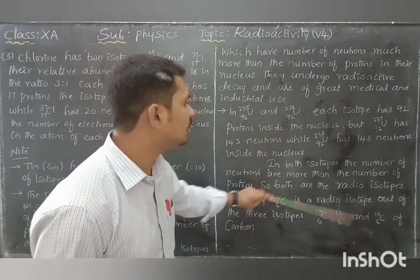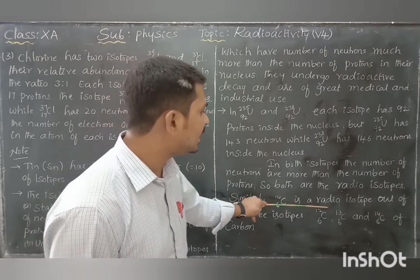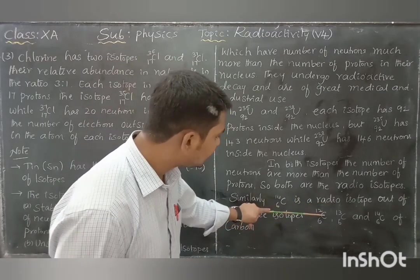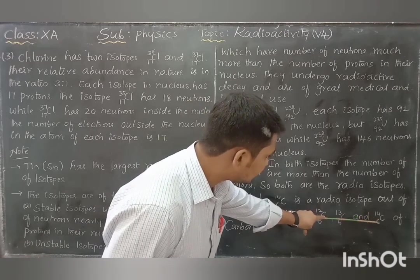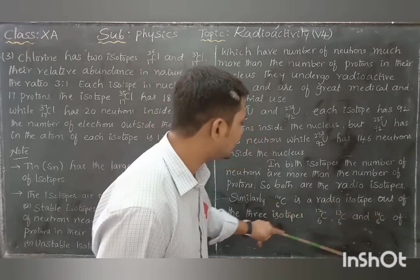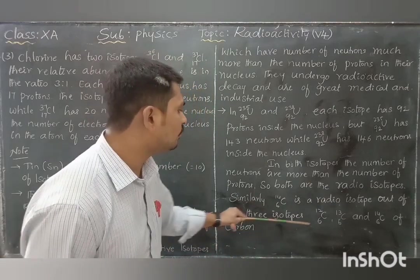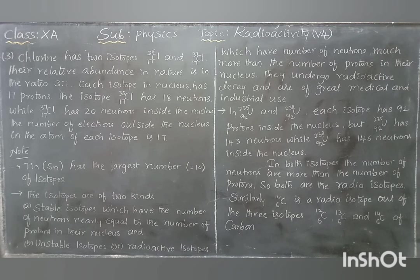Similarly, C-6-14 is a radioisotope out of the three carbon isotopes C-6-12, C-6-13 and C-6-14, because C-6-14 has a larger number of neutrons compared to the other two. Unstable or radioactive isotopes — in which the number of neutrons is much more than the number of protons — undergo radioactive decay, which is very essential for different fields.